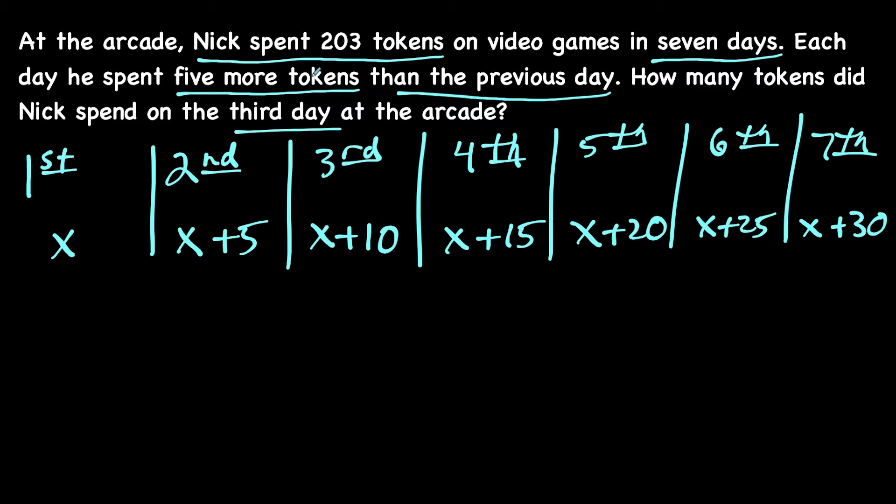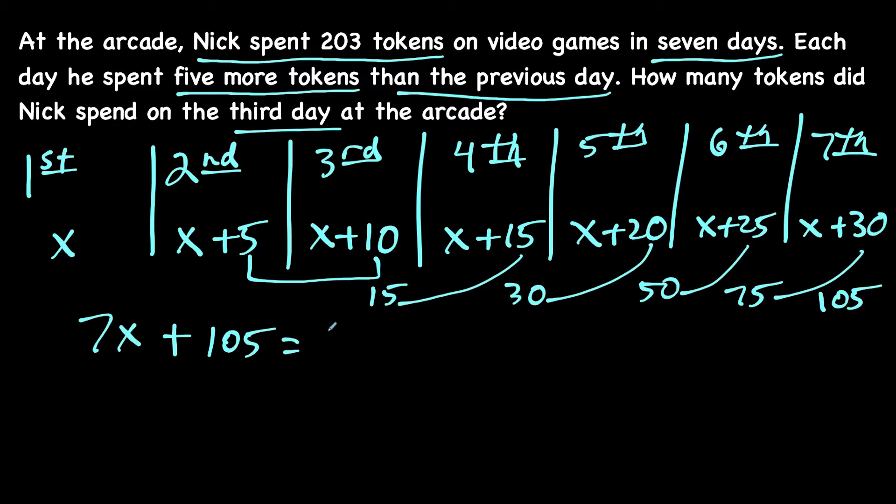Now we know in total Nick spent 203 tokens, so we're going to add all of this up. If you add up the x's seven times, that makes seven x. If we add up the numbers, we have five plus 10 is 15, then 15 plus 15 is 30, 30 plus 20 is 50, 50 plus 25 is 75, and 75 plus 30 is 105. So we have seven x plus 105 equals 203.